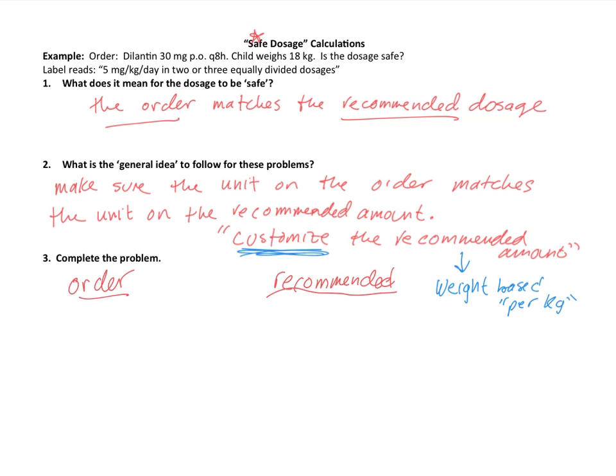The order, it's telling me that I need to administer 30 milligrams of this Dilantin, 30 milligrams, by mouth for every eight hours. So this is equivalent to saying 30 milligrams per dose. Every dose, the patient needs to receive 30 milligrams.